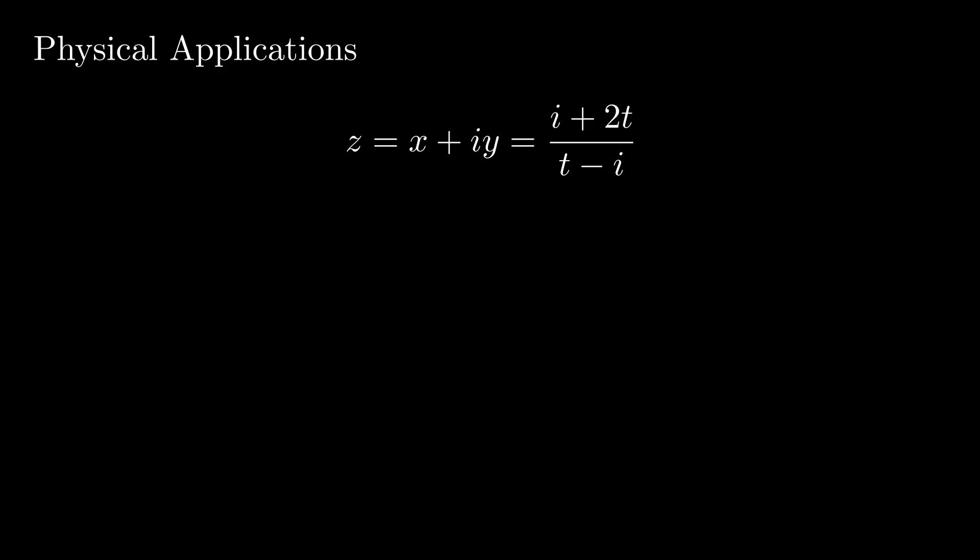The velocity then just becomes the norm of dz dt, and taking the derivative of the velocity would just give the acceleration directly.